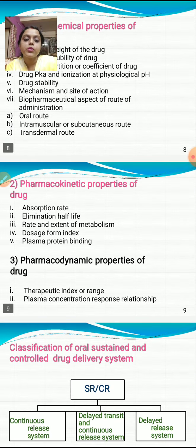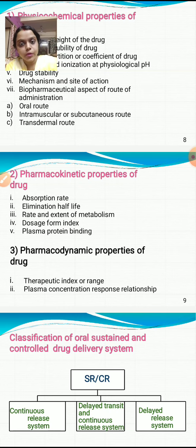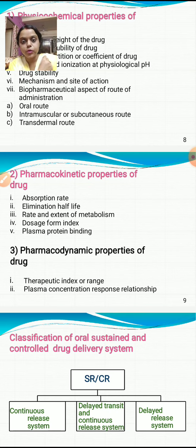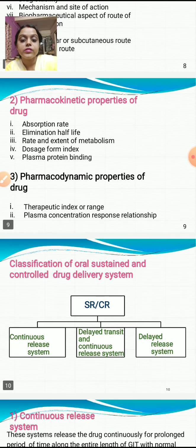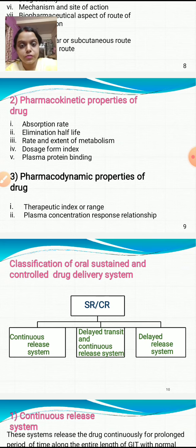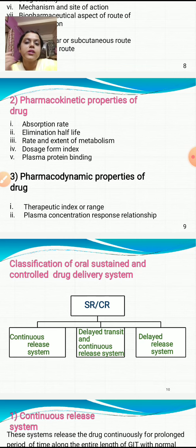The pharmacokinetic properties of the drug include five sub-points: absorption rate, elimination half-life, rate and extent of metabolism, dosage form index, and plasma protein binding. The pharmacodynamic properties of the drug are of two types: the therapeutic index or range, and the plasma concentration-response relationship, both of which are very important.